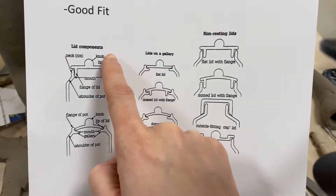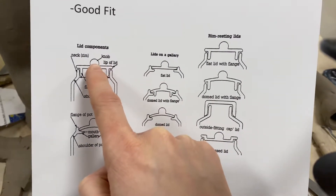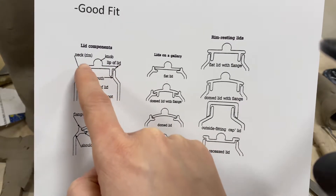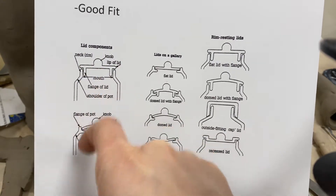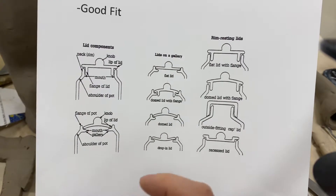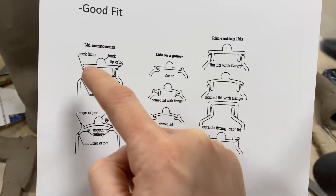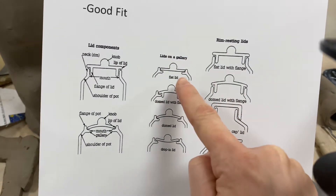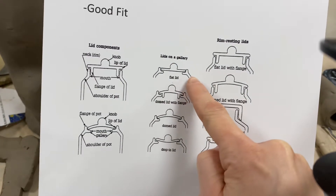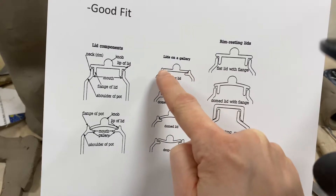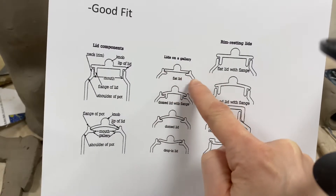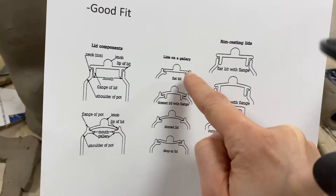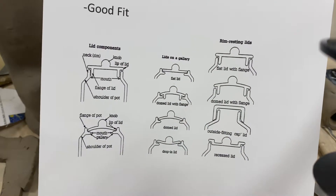The different parts of a lid are the knob or the finial, the flange which is those little recessed parts that come down into the form, and then you have just the body of the lid — that straight part across. Now some lids, like the one to the right here, do not have a flange, but because the actual pot creates this shelf — using just a loop tool you can cut that away — it doesn't really need that.